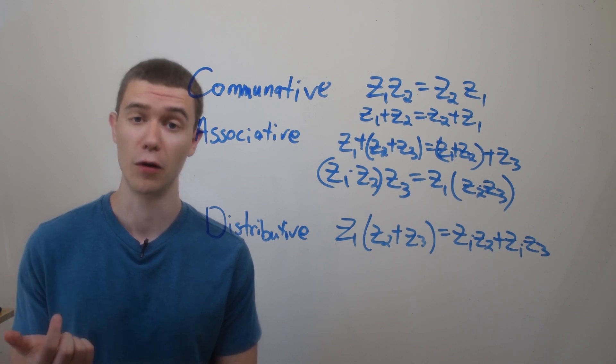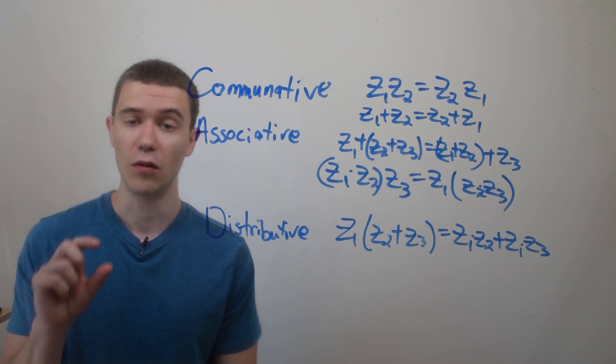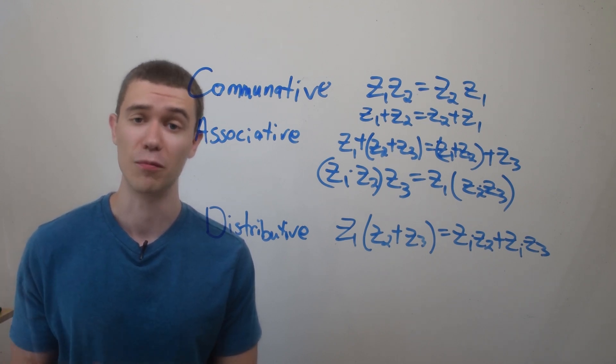That means it doesn't matter which way around we do it. We can either multiply z1 by z2, or z2 by z1, add z2 plus z1, or add z1 plus z2, and we'll obtain the same result.